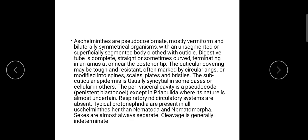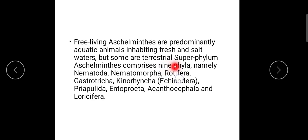In this superphylum Aschelminthes, the phyla included are: Priapulata, Endoprocta, Acanthocephala, and Rotifera. Rotifera and Gastrotricha are used as minor phyla. The phyla in this superphylum are: Nematoda, Nematomorpha, Rotifera, Gastrotricha, Kinorhyncha, Priapulida, Endoprocta, Acanthocephala, and Rotifera.